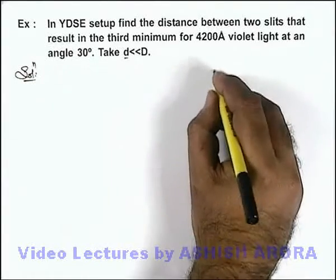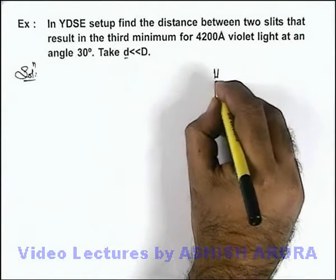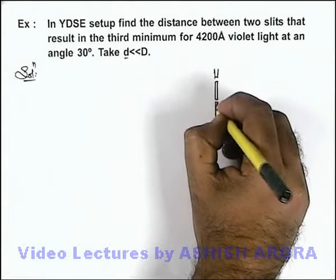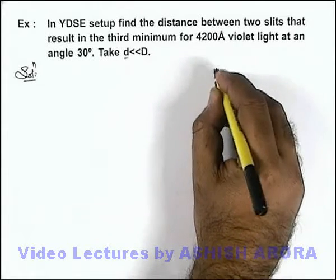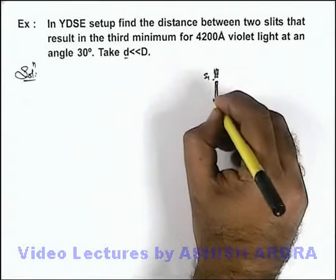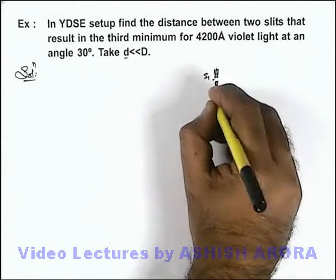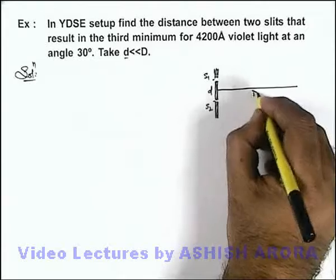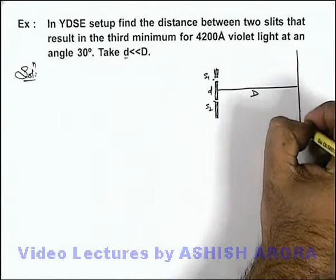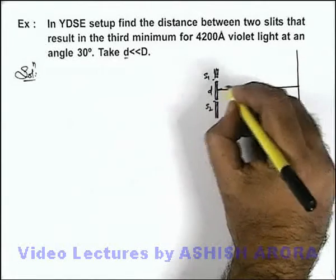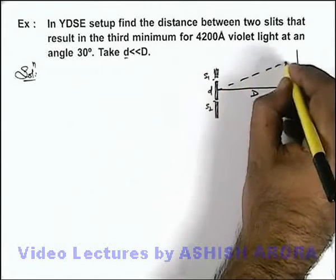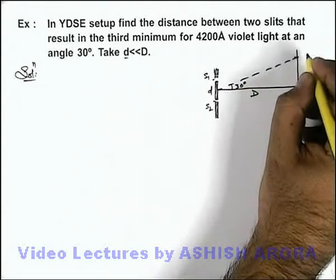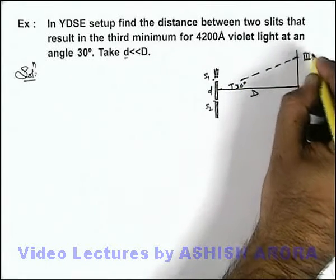If we draw this situation, we can see these are the 2 slits in the slits plane — slit S1 and slit S2 — which are separated by d. At a large distance capital D, this is the screen. We are given that at an angular separation of 30 degrees, this point is the 3rd minimum.